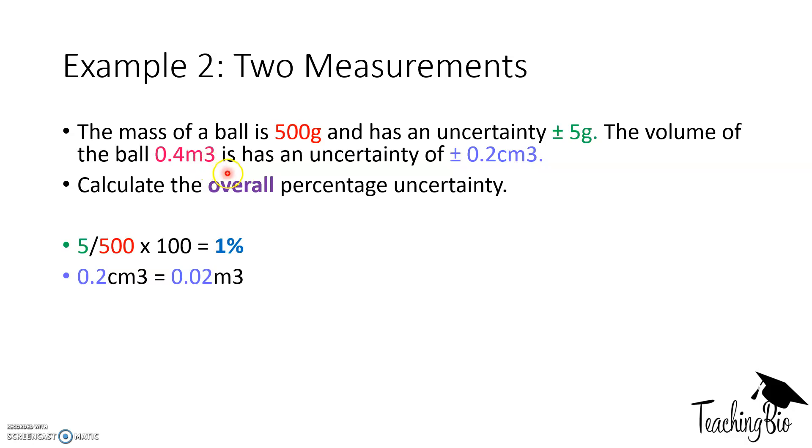As for the second example, we've got to make sure we convert the absolute error's units to the units that are the actual measurement, in this case meters cubed. So 0.2 centimeters cubed is 0.02 meters cubed. And now it's just 0.02 meters cubed, divided by 0.4, times 100, to get 5%. Now, because we want the overall percentage uncertainty, we have to slap the two numbers together. So 1 plus 5 is 6. The answer is 6%. That is the overall percentage uncertainty.